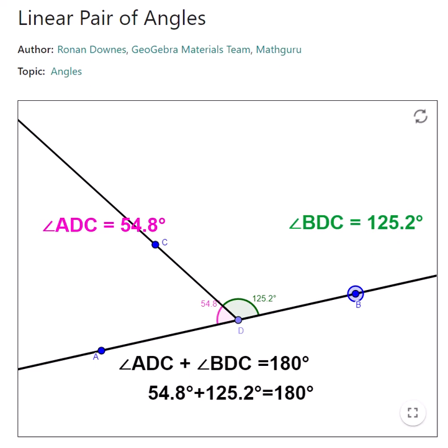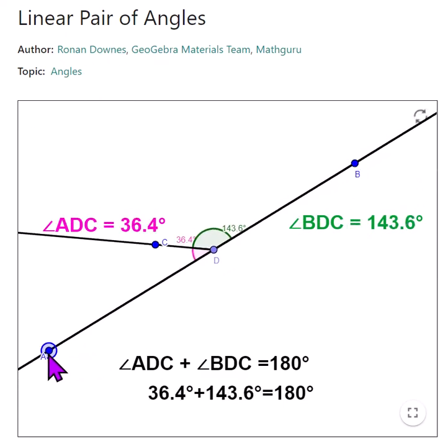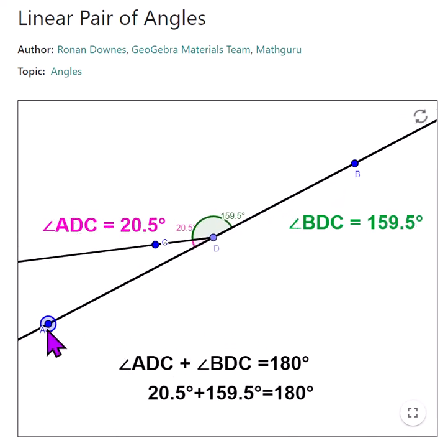Welcome back students. Here we are looking at linear pair of angles. The first thing is we have points A and B, and no matter where I put them, there's always a straight line between two points.